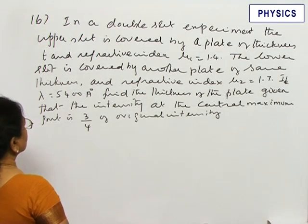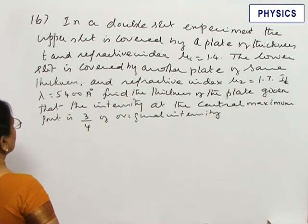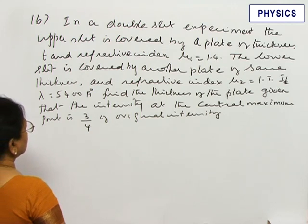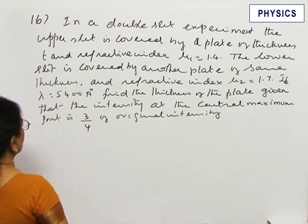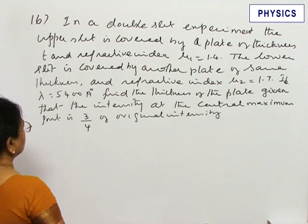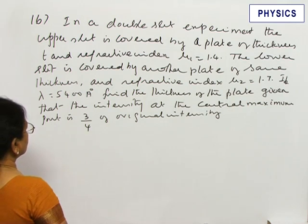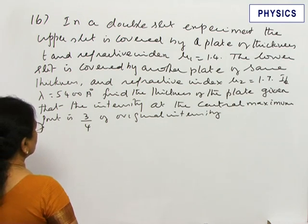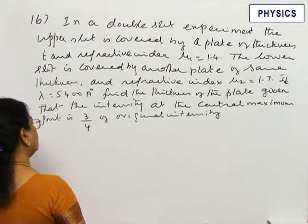μ₁ equals 1.4. The lower slit is covered by another plate of same thickness and refractive index μ₂ equals 1.7. If λ equals 5400 angstrom, find the thickness of the plate, given that the intensity at central maximum point is 3/4 of the original intensity.